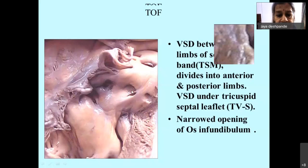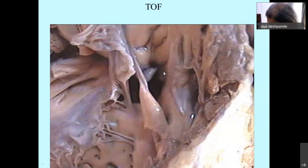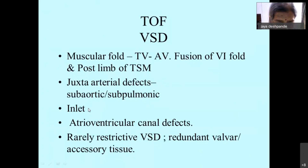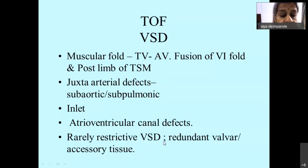Here is another example of a very narrow os infundibulum with thickened endocardium around it because the blood is trying to flow through it; here is the VSD with the overriding aortic valve. The muscular fold is due to fusion of the ventricular infundibular fold and the posterior limb of the trabecular septum marginalis. Some rare variations include juxta-arterial defects, inlet-type membranous defects, AV canal-type defects, and rarely a restrictive VSD because of redundant or accessory valve tissue.